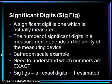Significant digits. A significant digit is one which is actually measured. The number of significant digits in a measurement depends on the measuring device being used. We will discuss the bathroom scale example in class — we need to understand which numbers are exact and which ones are estimated. All measurements include a number of exact digits plus one additional digit which is estimated.